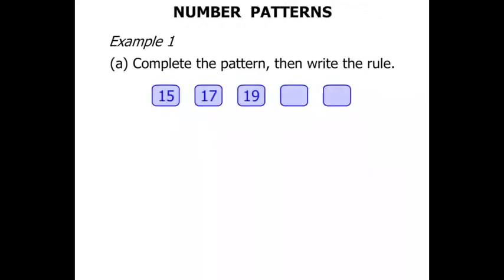So we've got a pattern there. We know the first three numbers. So let's see what happens. We've gone from 15. How do we get to 17? Well to do that we add 2. Now from 17 to 19 again we add 2.